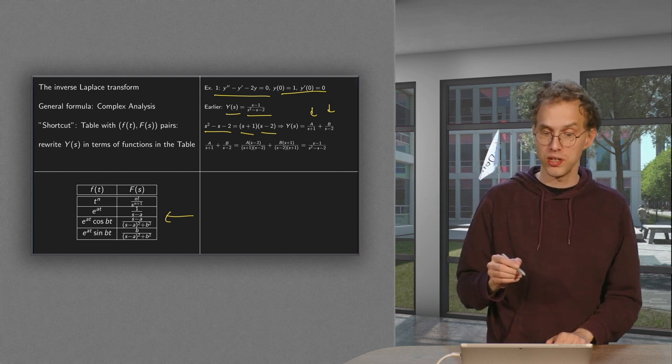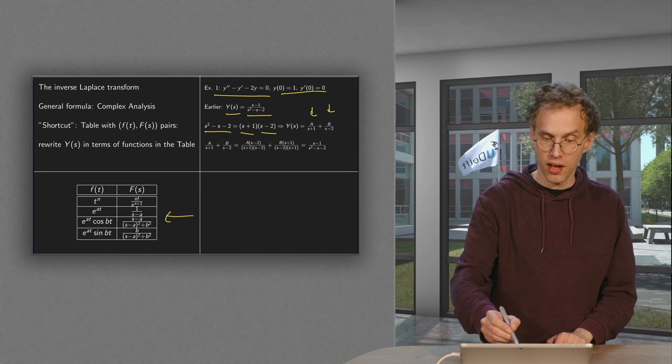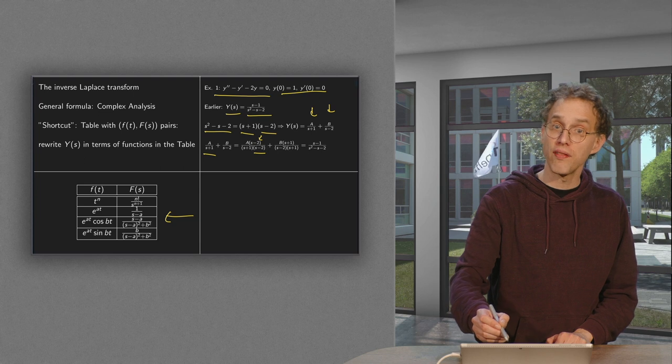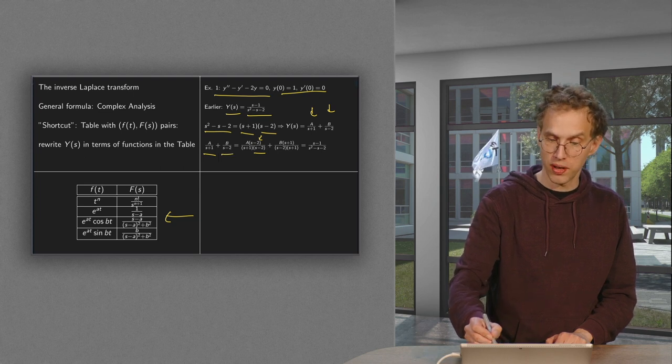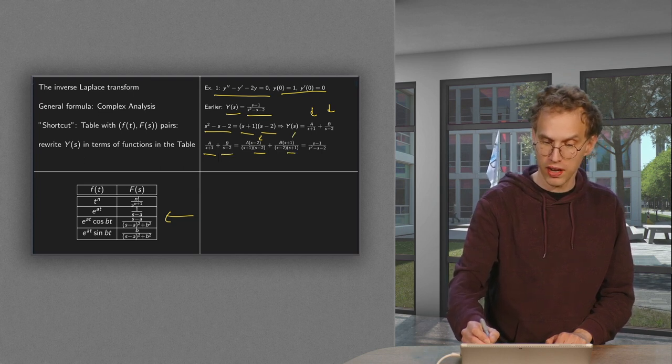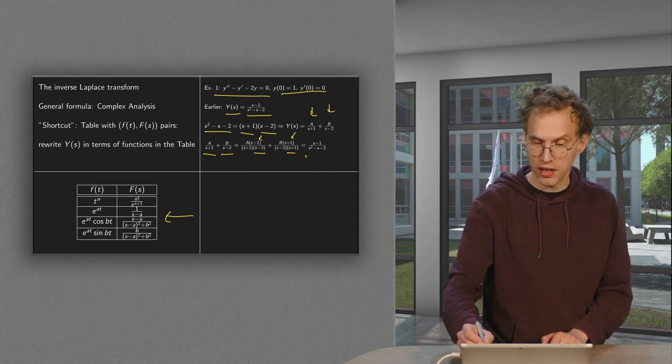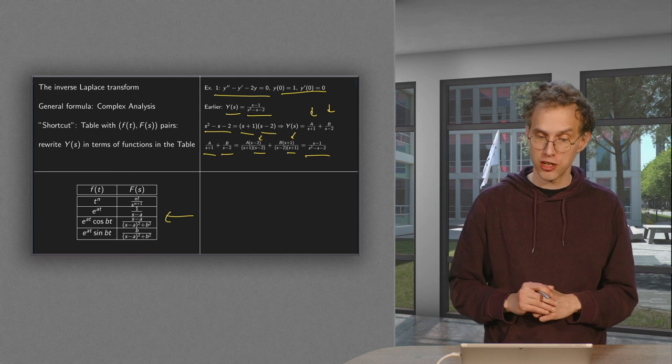So how do we do this decomposition? We multiply the first term by 1, by s minus 2 over s minus 2. And we multiply the second term by 1, by s plus 1 over s plus 1. And then we know that this quotient has to be equal to s minus 1 over s squared minus s minus 2.